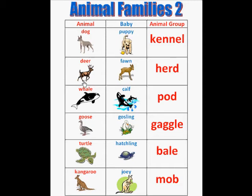Then we have a deer, and the deer's baby is called a fawn, and the animal group is a herd.